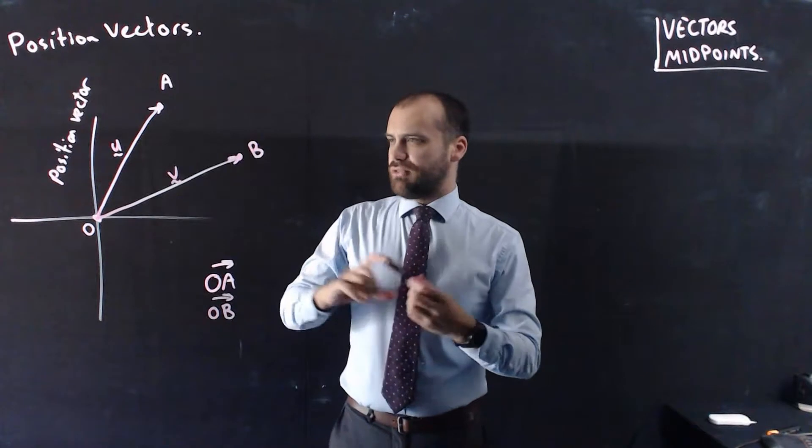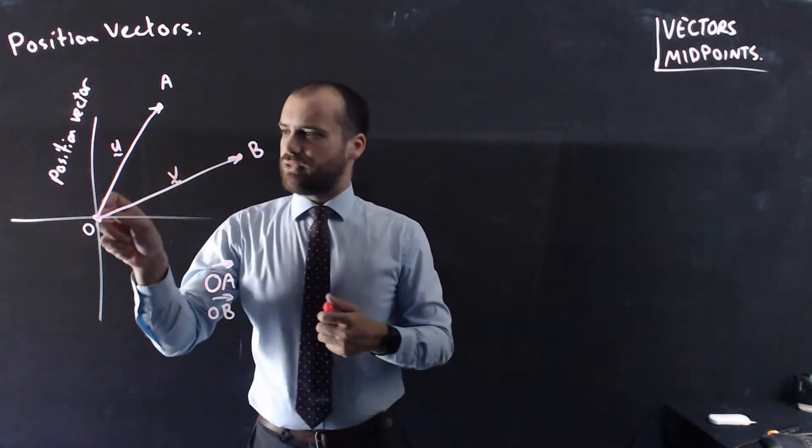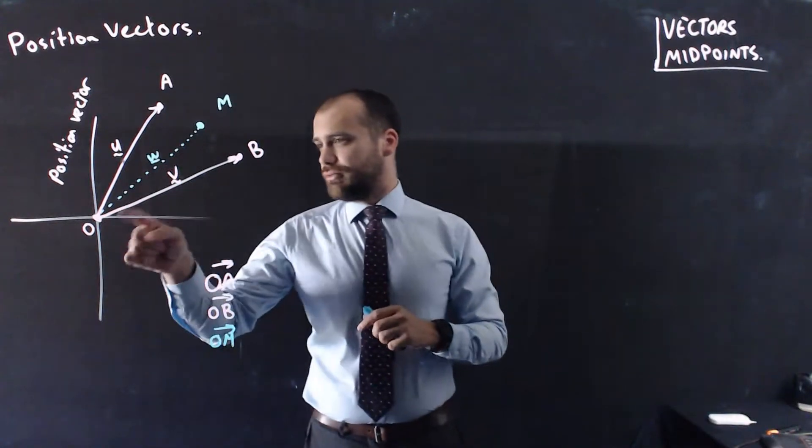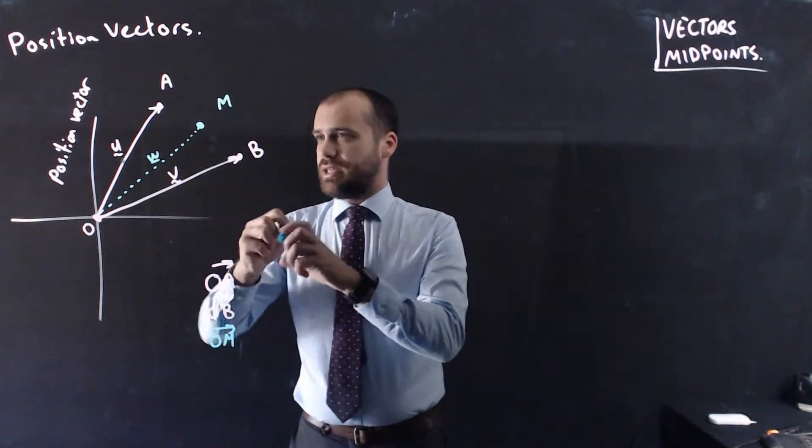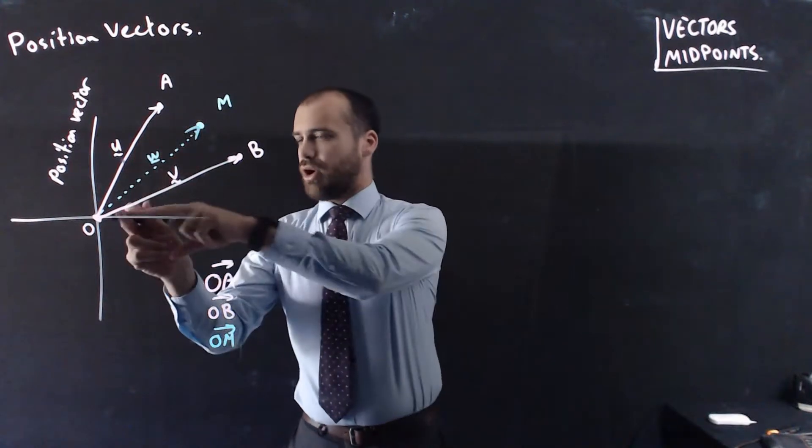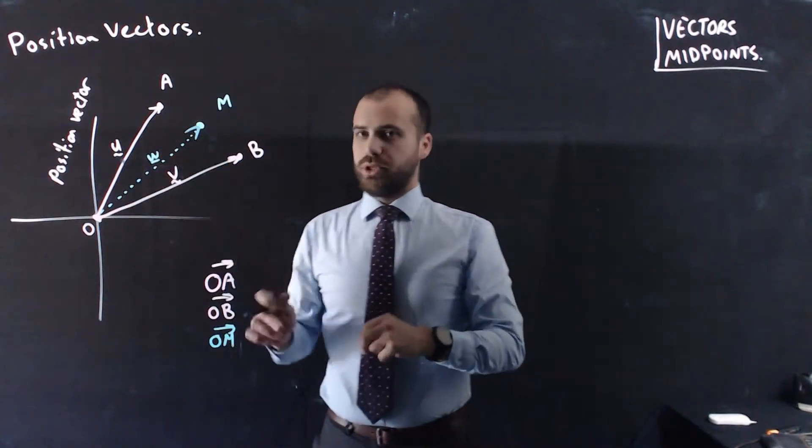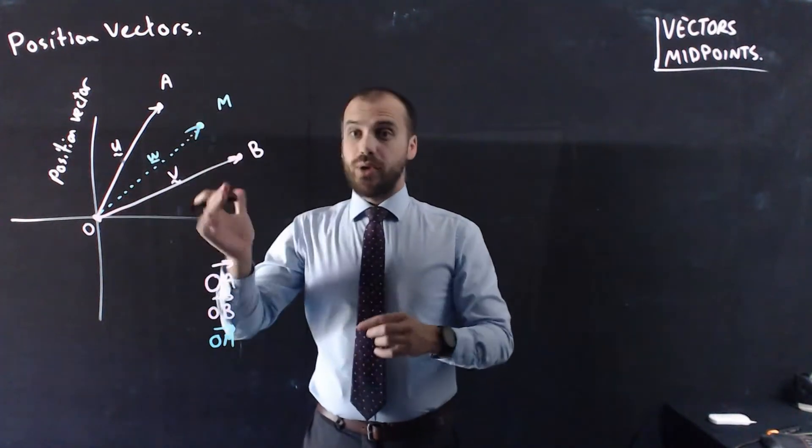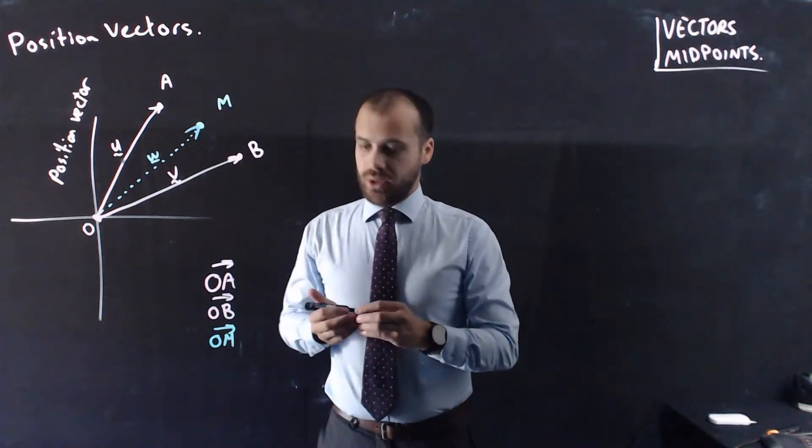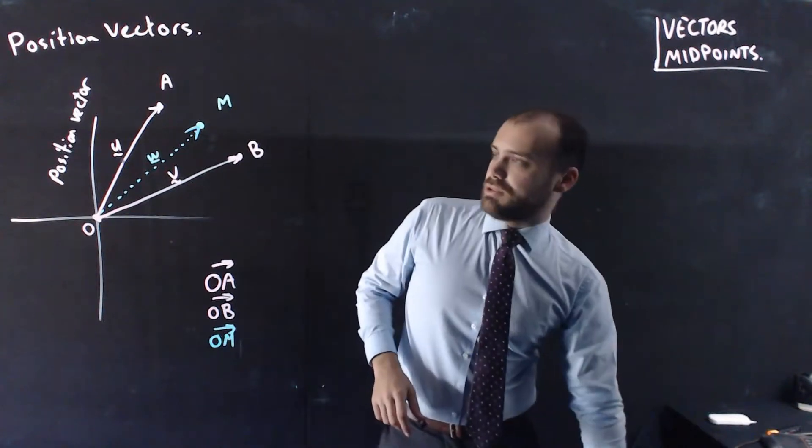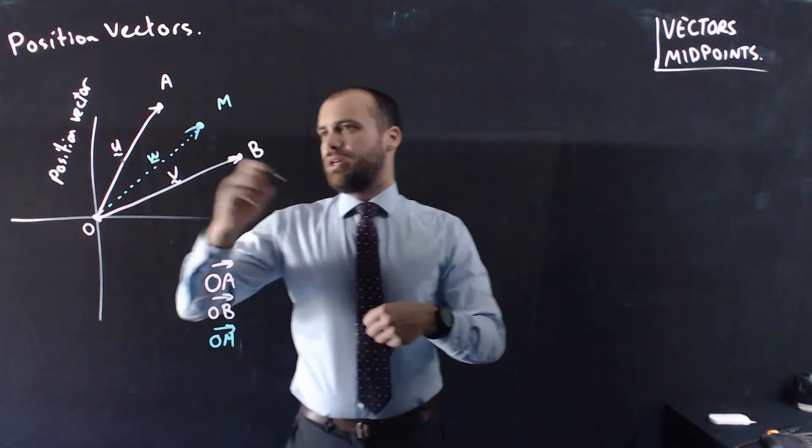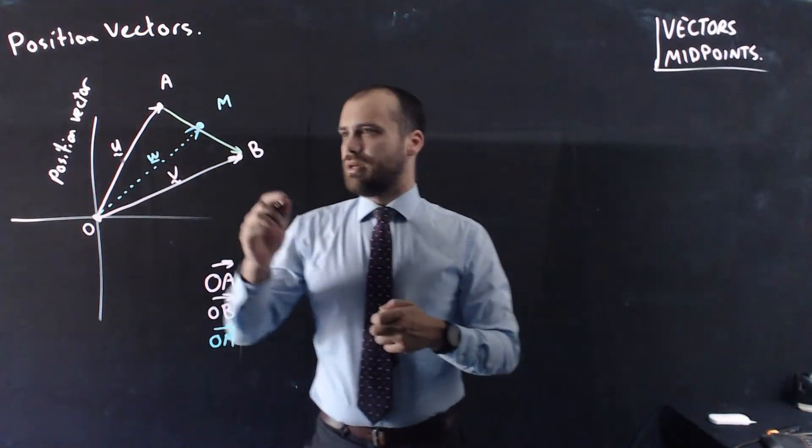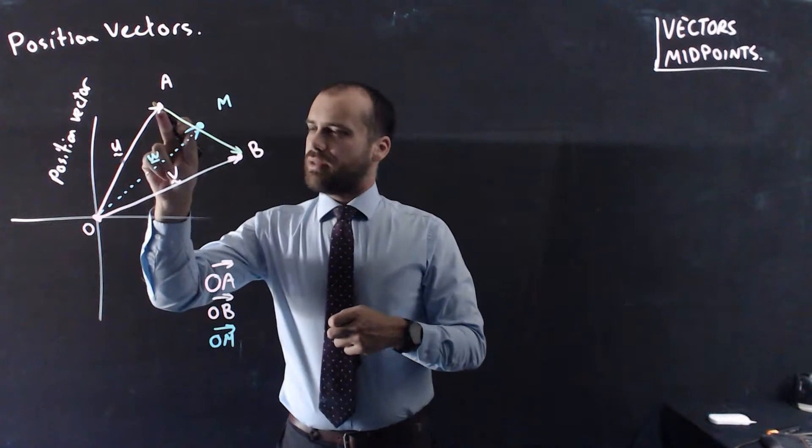And what I'm going to try to find is the vector from the origin to M. So, there's the situation. I'm trying to find this blue vector here, OM, which conveniently I'm going to call W. All right, so how are we going to find OM? Well, let's look at something else that we can do. We could find AB.